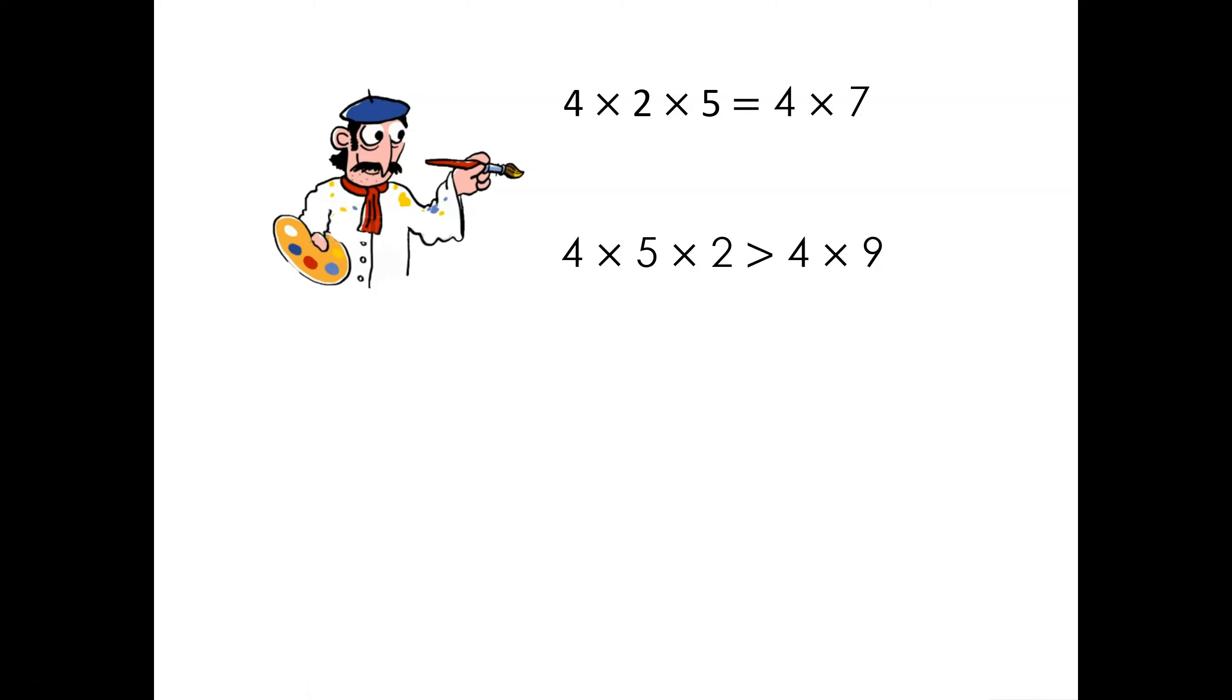Leonardo has painted some number sentences for us but he's not too sure whether they are correct. Can you work out if Leonardo is correct without calculating? Pause the video now and have a wee think. Remember, try not to do all of the calculations. Let's have a look together. In the first number sentence we can see that 4 × 2 = 8, which gives us 8 × 5. Eight and five are greater than four and seven, so the product of eight and five will be greater than the product of four and seven. Alternatively, we could have found that 2 × 5 = 10. So this gives us 4 × 10, and 4 × 10 is greater than 4 × 7. His first equation is not correct. Maybe he'll have better luck with the second one. In the second equation we again have 5 × 2 = 10. This gives us 4 × 10 is greater than 4 × 9. That's correct. Well done, Leonardo.